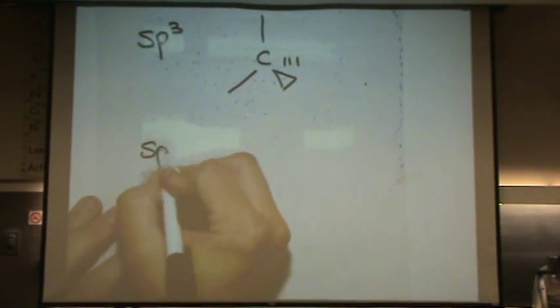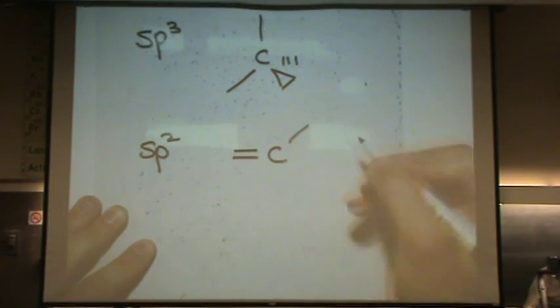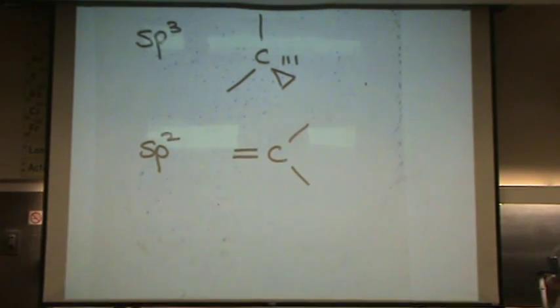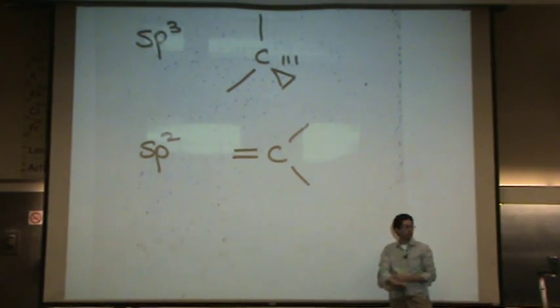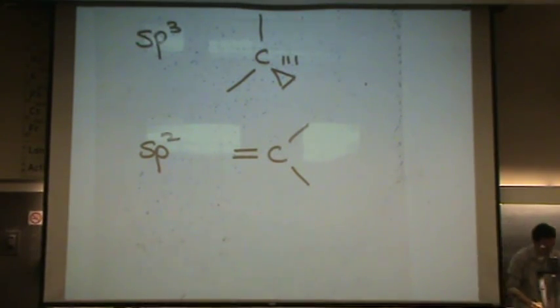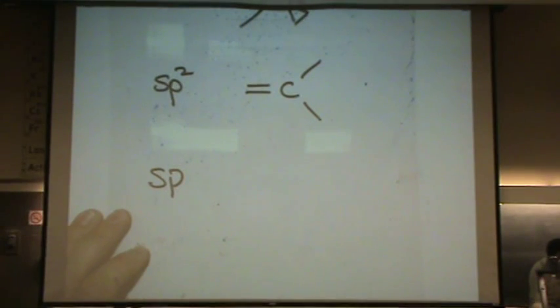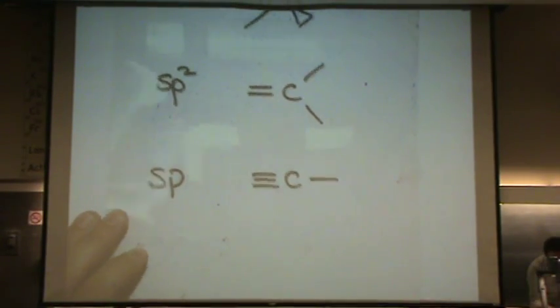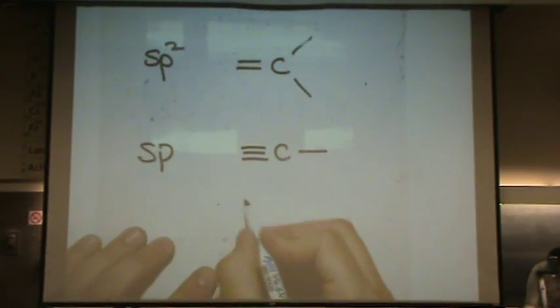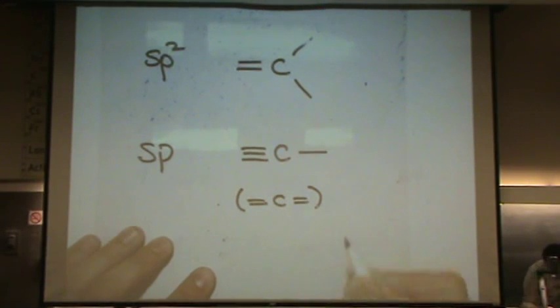So carbon could look like this. It could look like sp2, where it has a double bond and it's trigonal planar - completely flat, totally in the plane. One double bond, two single bonds. Or it could look like sp hybridized, where it has a triple bond and a single bond. And occasionally, but rarely, two double bonds.